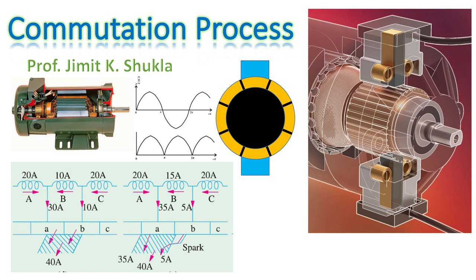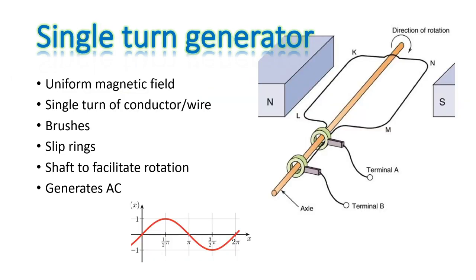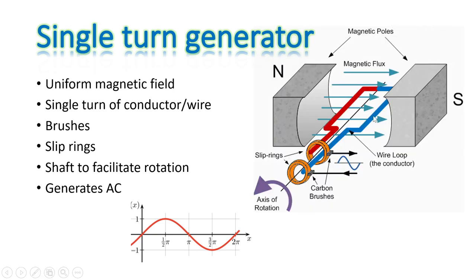Commutation process is a very interesting phenomenon in DC machines. If we consider a simple single-turn generator which has a single turn of conductor or wire free to rotate on a shaft placed inside a uniform magnetic field, it has slip rings connected with brushes. When rotating, we can convert rotating terminals to stationary terminals and collect the EMF induced inside the rotating coil through stationary brushes. If we rotate such a single-turn generator, it will inherently generate alternating voltage.